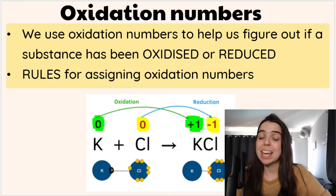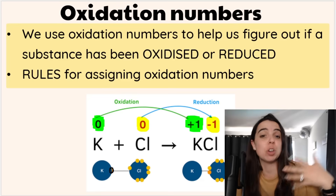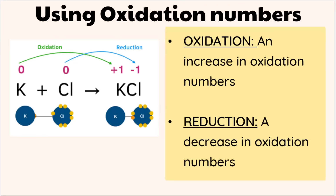Let's go over oxidation numbers and how to assign or determine oxidation numbers to help us figure out whether a substance has been oxidized or reduced. We can assign oxidation numbers to substances in a chemical reaction. If we see an increase in oxidation number, that means the substance has been oxidized. For example, potassium goes from an oxidation number of 0 to +1, showing oxidation has occurred. Chlorine goes from 0 to -1, a decrease, showing reduction.